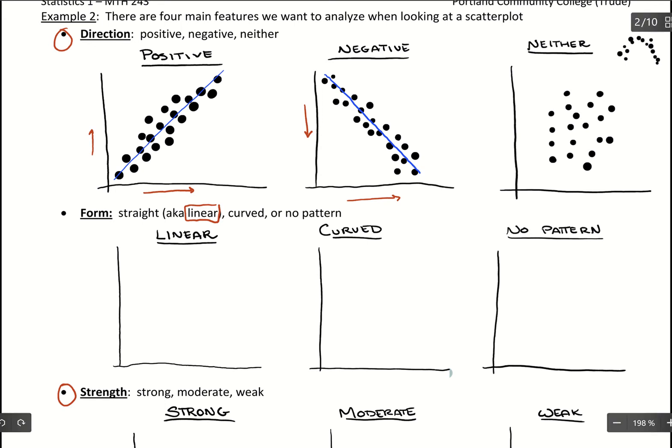In fact, in the neither case where it's just this kind of blob here, if we drew a line to fit, what we're going to see when we start mapping these lines is this would give a horizontal line, which the slope of that line is zero. So it's neither positive nor negative.